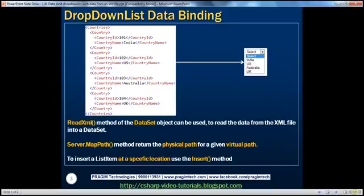In this session, we'll learn about binding a drop-down list to an XML file. Just like how we can use a database table to store data, we can use an XML file as well. For example, here I have a countries.xml file, which has a countries root XML element. Within countries, we have country elements, and within each country element, I have country ID and country name.